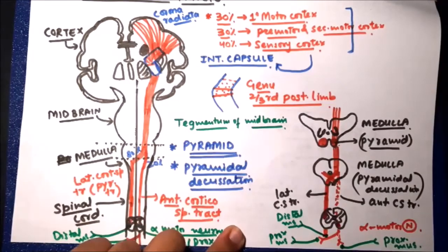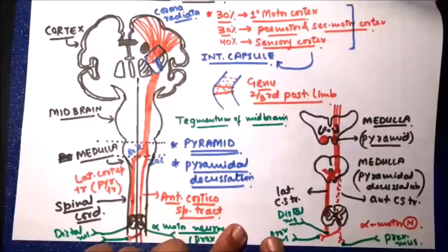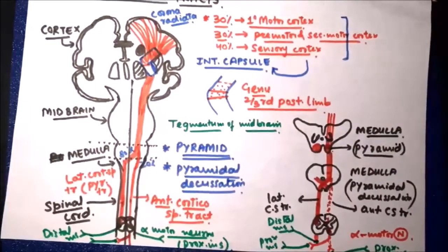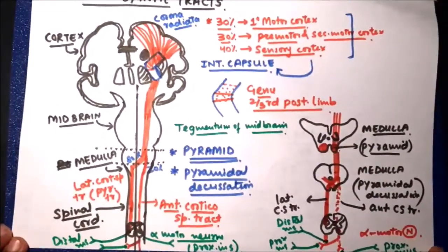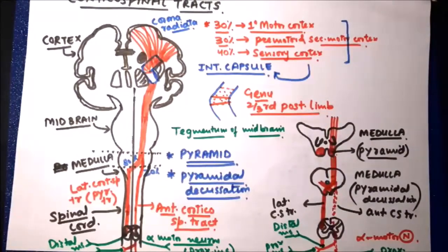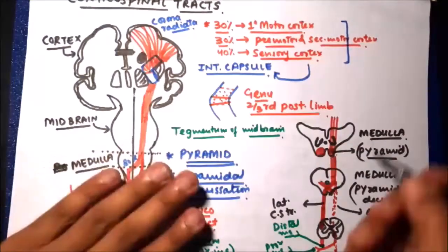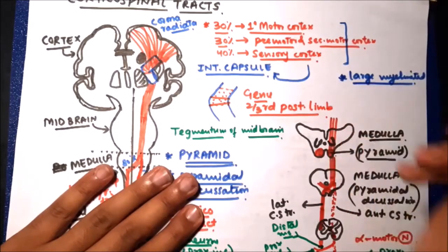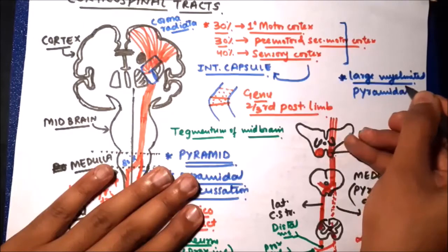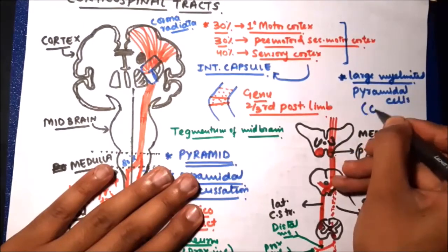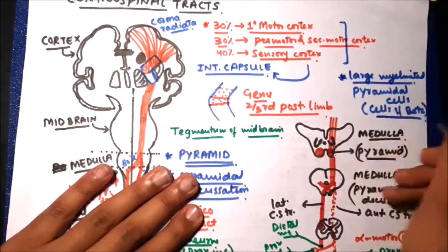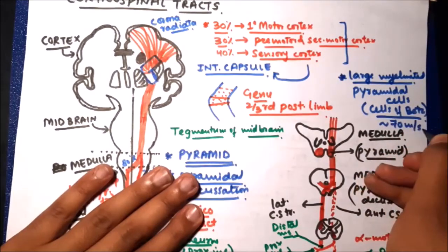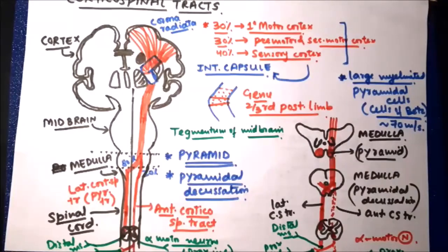The lateral corticospinal tract, also called the pyramidal tract, is responsible for fine control of voluntary movements, whereas the anterior corticospinal tract plays a role in maintaining tone and posture. Most fibers in the corticospinal tract are large myelinated fibers mainly originating from the giant pyramidal cells in the cortex, called Betz cells. The velocity of impulse conduction through these fibers is very high — almost 70 meters per second.